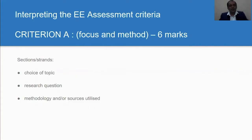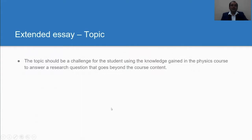In criteria A, focus and method, which is six marks and very important, I am dividing it into three sections: first is choice of topic, then research question, and then methods and sources utilized.